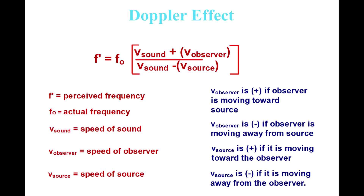We also have this equation to calculate the size of the shift in frequency. Here we have F prime — F with a little apostrophe after it — and that's the frequency that you actually hear. F zero is the frequency being produced by the source of the sound. V sound is the speed of sound, which is usually about 340 meters per second. V observer is the speed that the observer is moving, and V source is the speed that the source of the sound is moving. The sign convention: if the observer is moving towards the source, plug that in as positive. If moving away, plug it in as negative. If the source is moving towards the observer, plug in the velocity as positive; if moving away, negative. In other words, towards is positive, away from is negative.